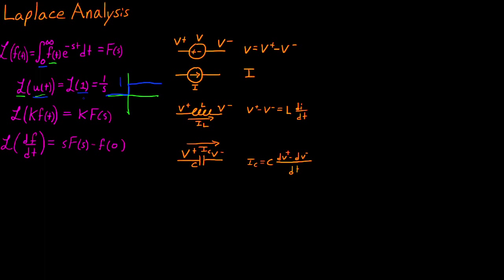The result of taking the Laplace transform of 1 gives you a value of 1/s. The next thing is if we have a constant multiplying the function we're taking the Laplace of. If you take the Laplace of a constant multiplied by a function of time, you end up with that same constant multiplied by that function Laplace-transformed to the s domain. We can pull that constant outside of the integral, and it's not going to affect that integration, so you end up with k multiplied by that function of s.